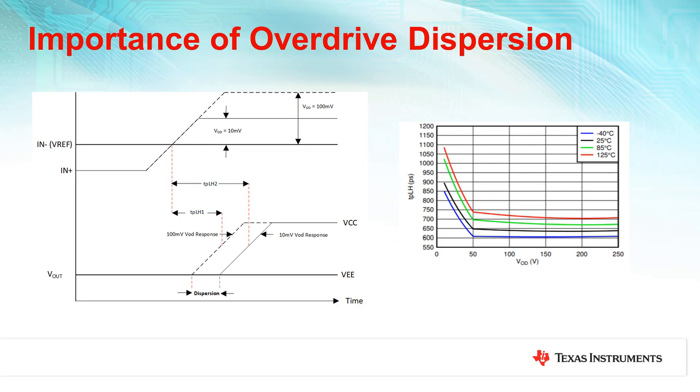Here is a curve showcasing the propagation delay response of a comparator with varying input overdrives. As seen here, larger input overdrives result in a faster response time. However, this faster response time tends to saturate at input overdrives greater than 100 millivolts.